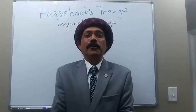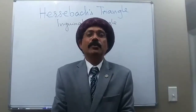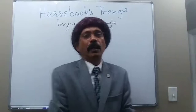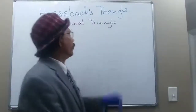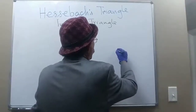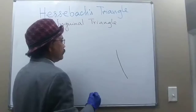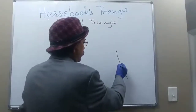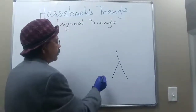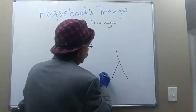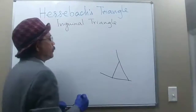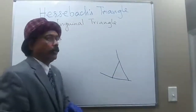Hello, my name is Dr. Diwan S. Raja. Today I will discuss the anatomy of Hesselbach's triangle. Hesselbach's triangle is also called the inguinal triangle. It is bounded by the lateral border of the rectus abdominis muscle, the inferior epigastric artery, and below by the inguinal ligament.